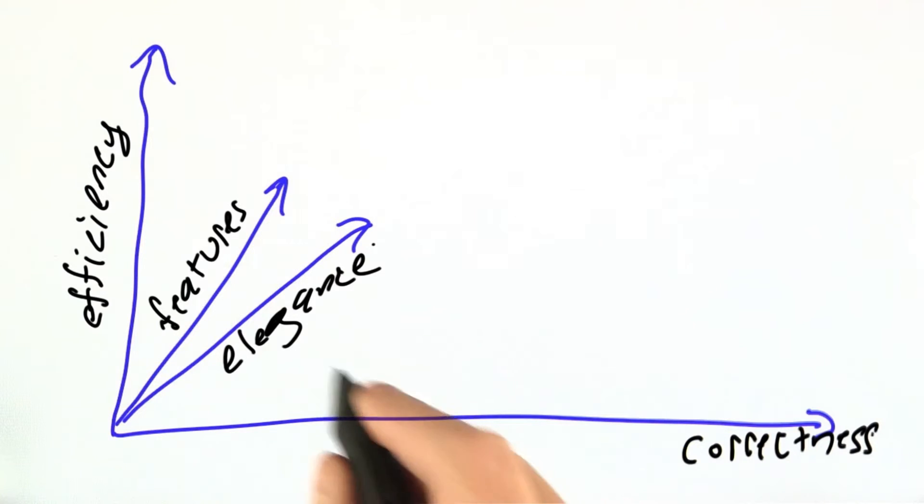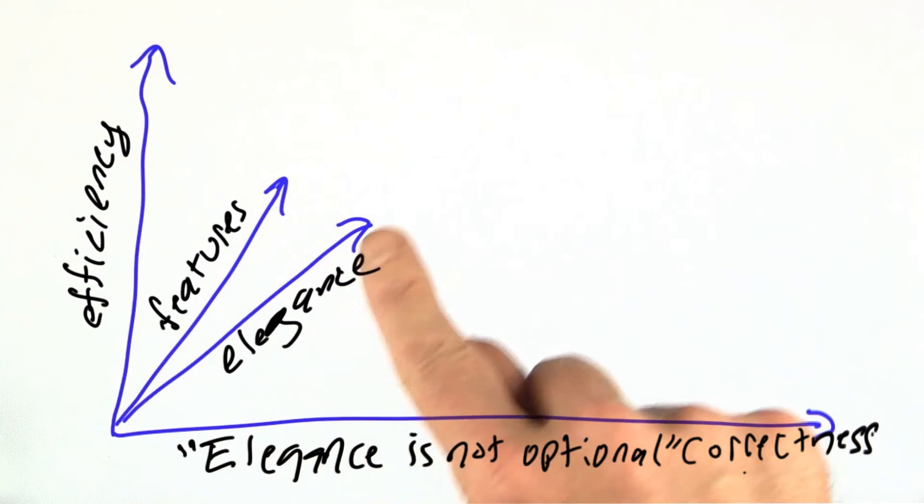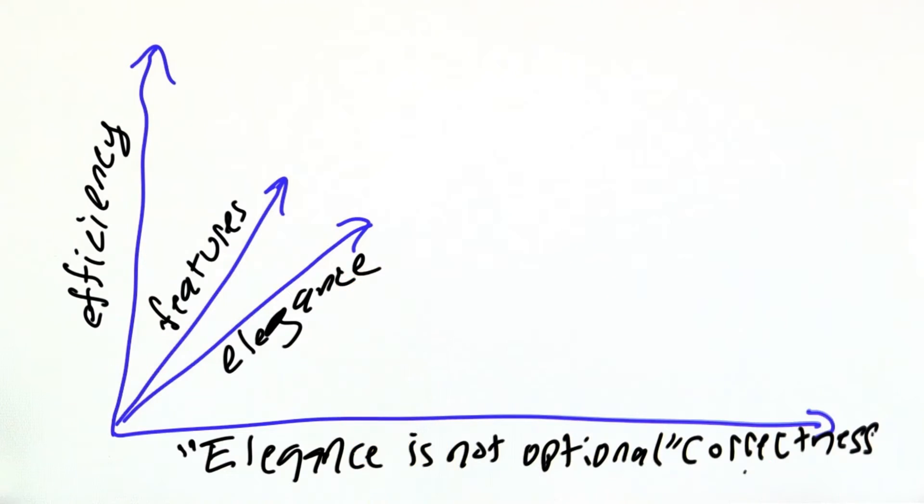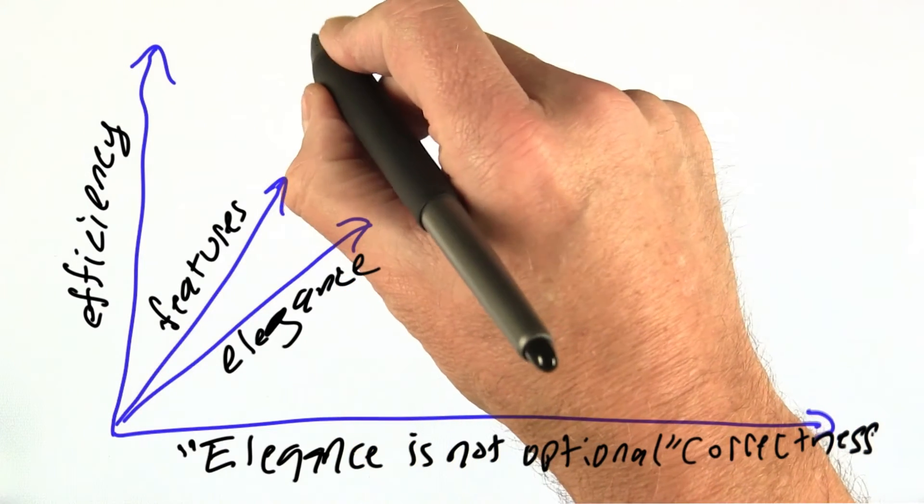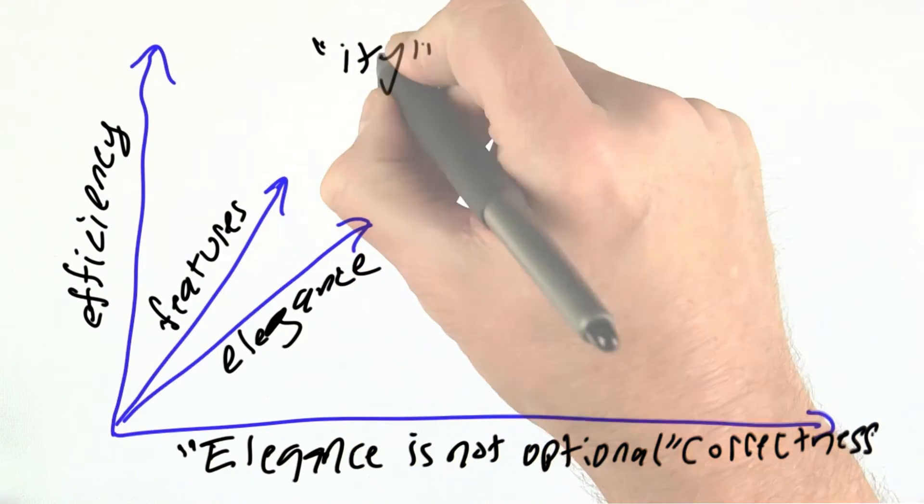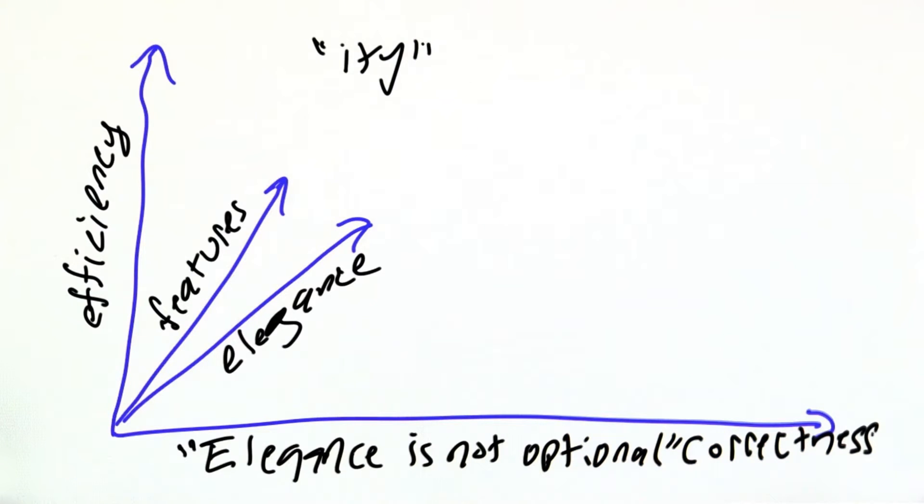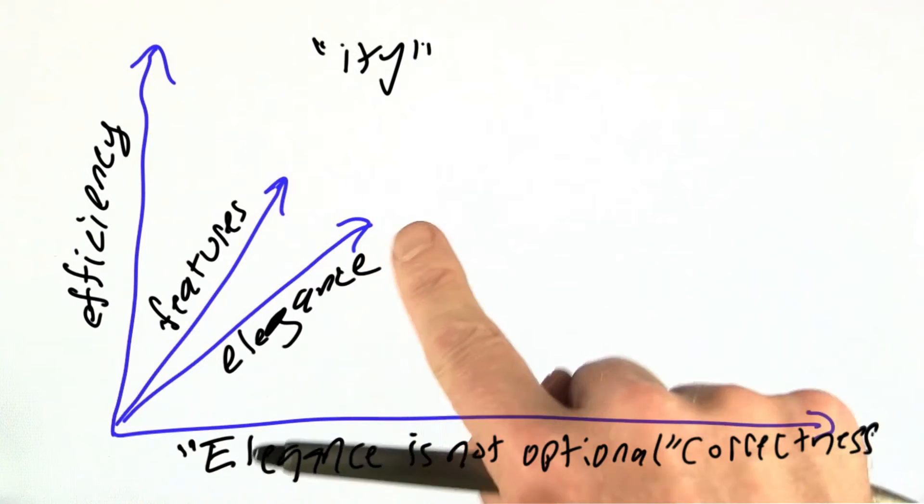I'm using the word elegance here coming from Richard Akeef, a programmer who said elegance is not optional. Elegance encompasses a number of attributes, or as they are sometimes called 'ities'—that is, things that end in I-T-Y like clarity, simplicity, and generality.